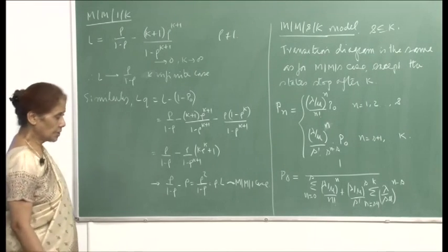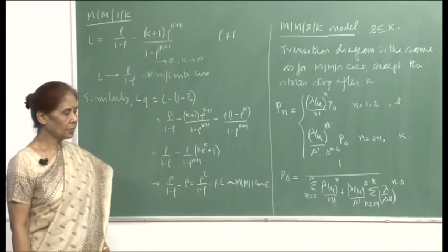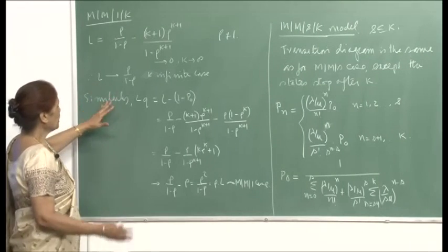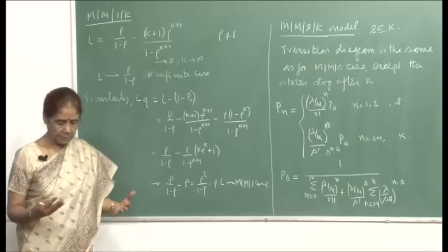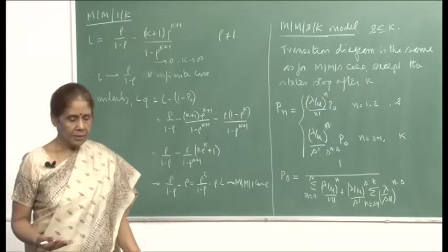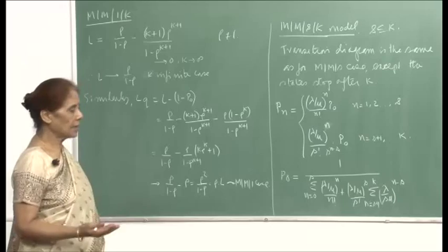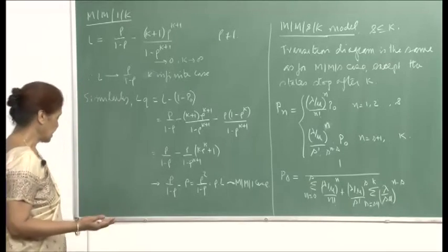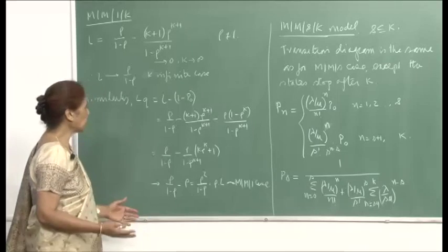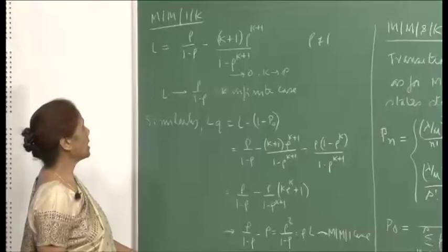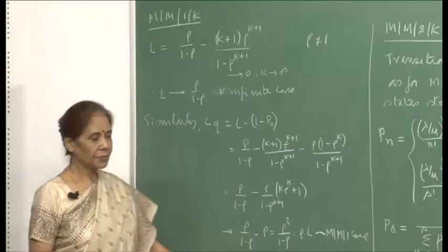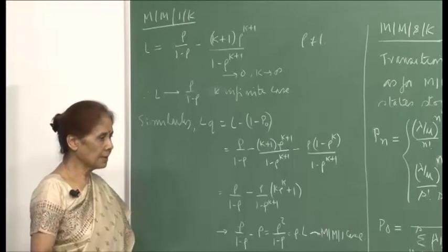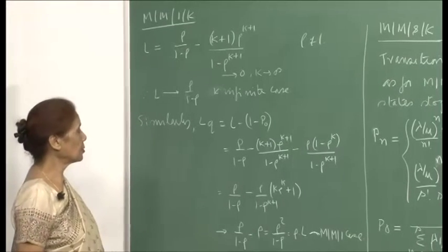In the last lecture, we talked about the MM1 case. The basic thing to note is that the difference between the MM1 case and the MM1K case is only the queue size — we are restricting the number of people in the system. For MM1K, the number of states only goes up to k, whereas for MM1, the states could go up to infinity.